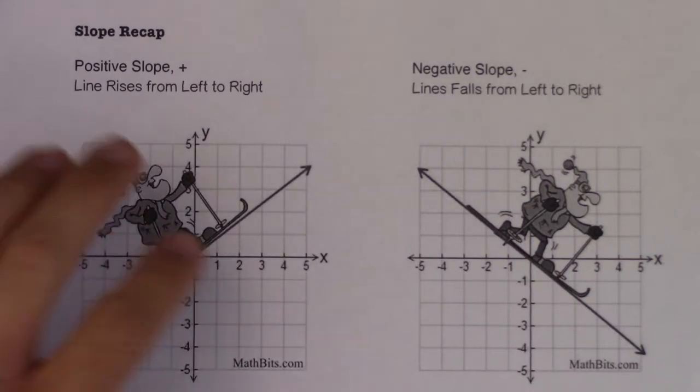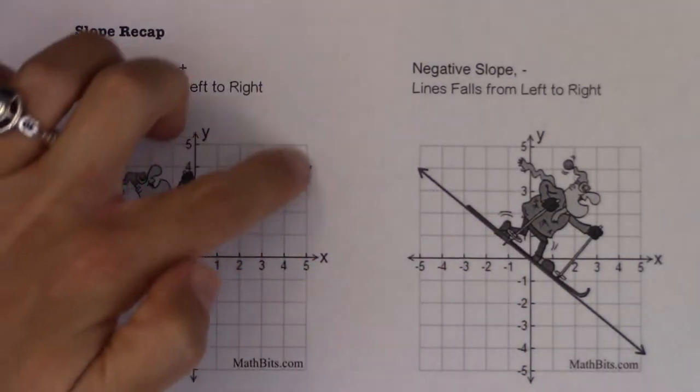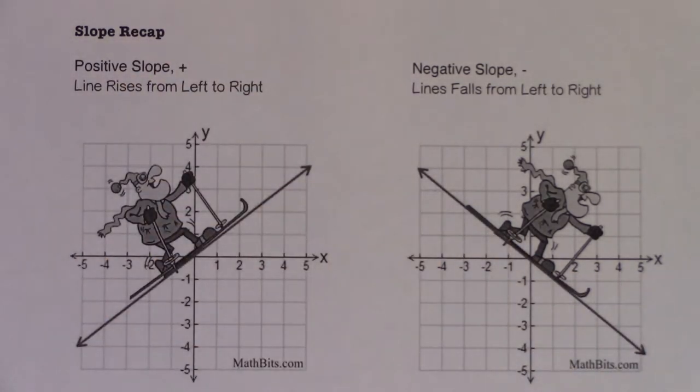All right, and then the exceptions. These are most of your lines, positive slopes and negative slopes, where they have increasing and decreasing. But the exceptions to that are the horizontal and vertical lines.